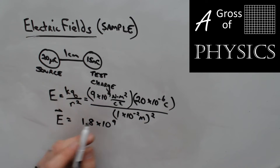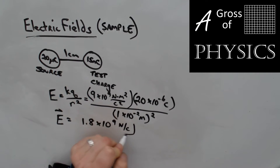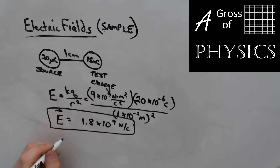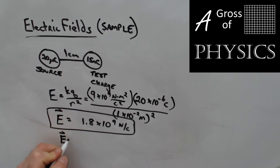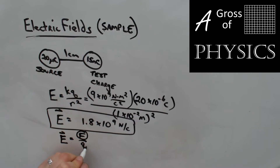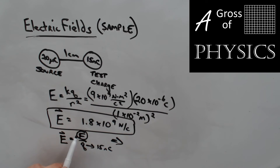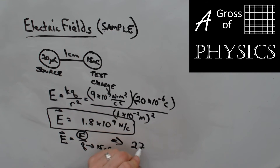The result is 1.8×10⁹ Newtons per Coulomb. That's the electric field strength. Now if we wanted to find the force acting on the test charge using E equals F over Q: we know the electric field strength, and the charge is 15 nanocoulombs = 15×10⁻⁹ coulombs. Multiplying the two, 1.8×10⁹ times 15×10⁻⁹, we get a force of 27 Newtons.